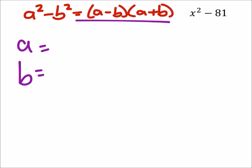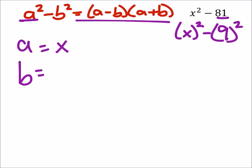So, my a looks like it's just going to be x, because this would be x squared, and that's my a. 81 is a perfect square as well, that's going to be 9 squared, with a minus between. So, difference of squares, my b is 9.